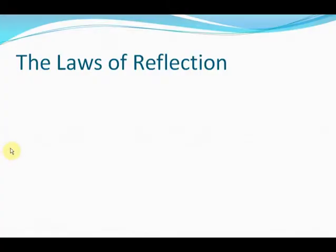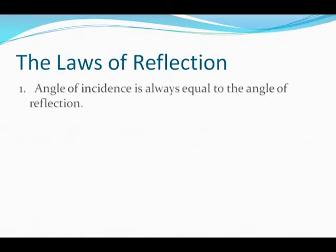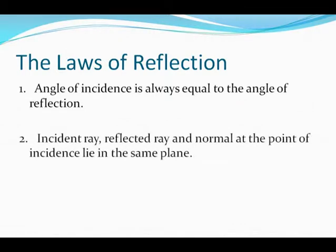The first thing we need to study is the laws of reflection — how is reflection taking place? There are two laws of reflection. The first is that the angle of incidence is always equal to the angle of reflection. The second law is that the incident ray, reflected ray, and normal at the point of incidence lie in the same plane.